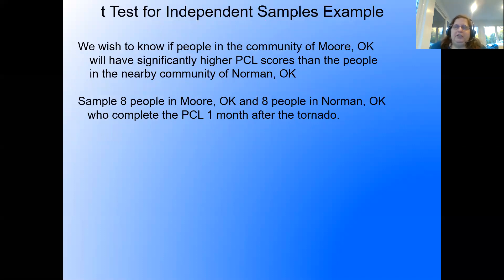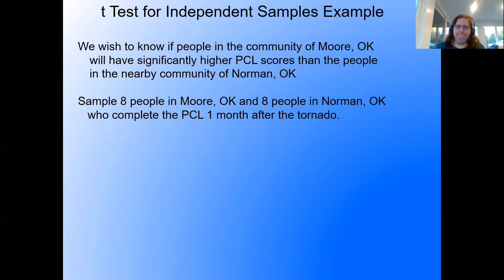Let's jump into an example. We wish to know if people in the community of Moore, Oklahoma will have significantly higher PCL scores than people in the nearby community of Norman, Oklahoma. The people in Moore suffered a tornado, and we're looking at their post-traumatic checklist scores as a result. People in Norman were mostly spared. We'll sample eight people in Moore and eight people in Norman who complete the PCL one month after the tornado.